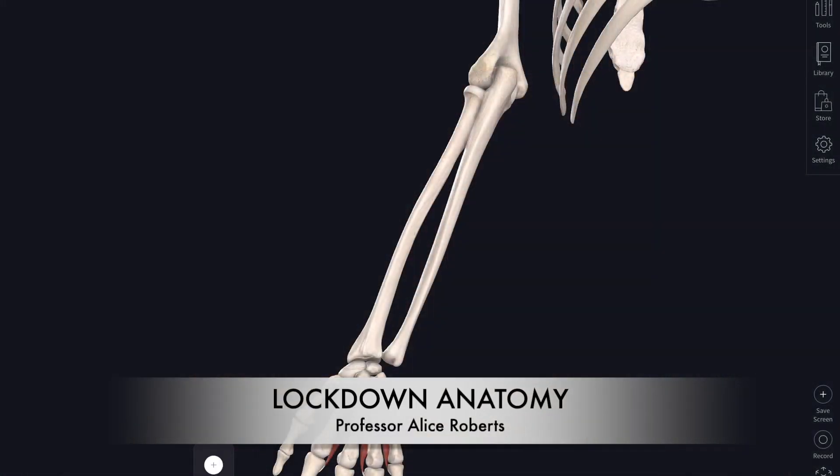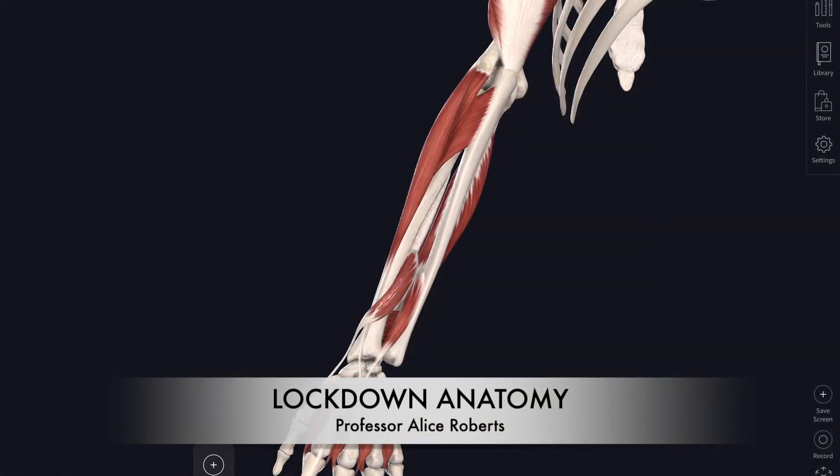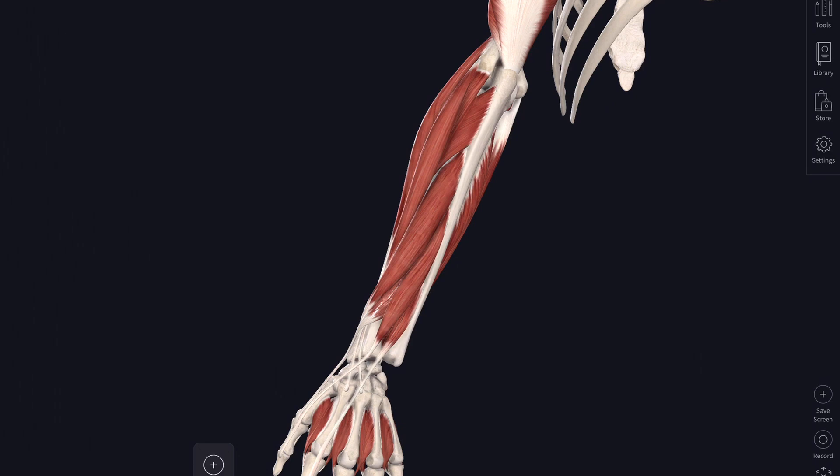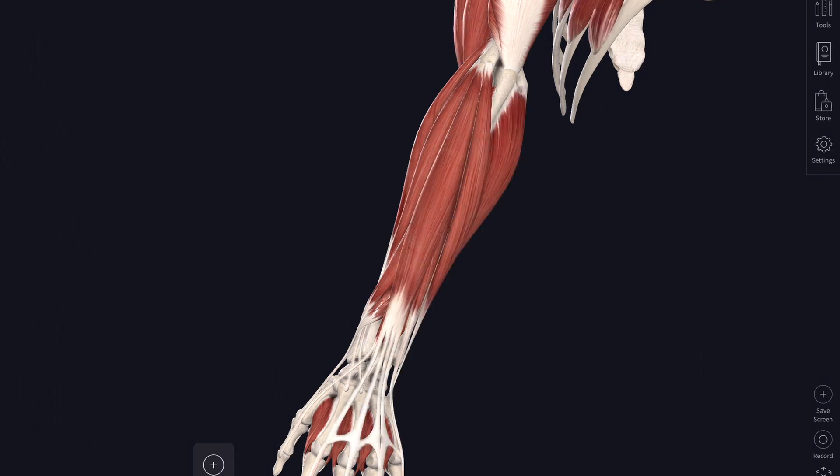Hello, I'm Professor Alice Roberts. This is Lockdown Anatomy. We've looked at the bones and the muscles of the upper limb, we've looked at the blood vessels — the arteries and the veins — and now it's time to look at the nerves. Once again, I'm using Complete Anatomy to show you inside the human body.